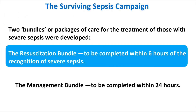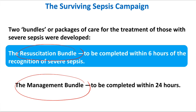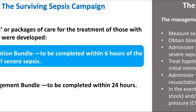The Surviving Sepsis Campaign developed two bundles — packages for treatment of severe sepsis. These are the resuscitation bundle and the management bundle. The resuscitation bundle should be completed within the first six hours of recognition of sepsis, while the management bundle should be completed within 24 hours.